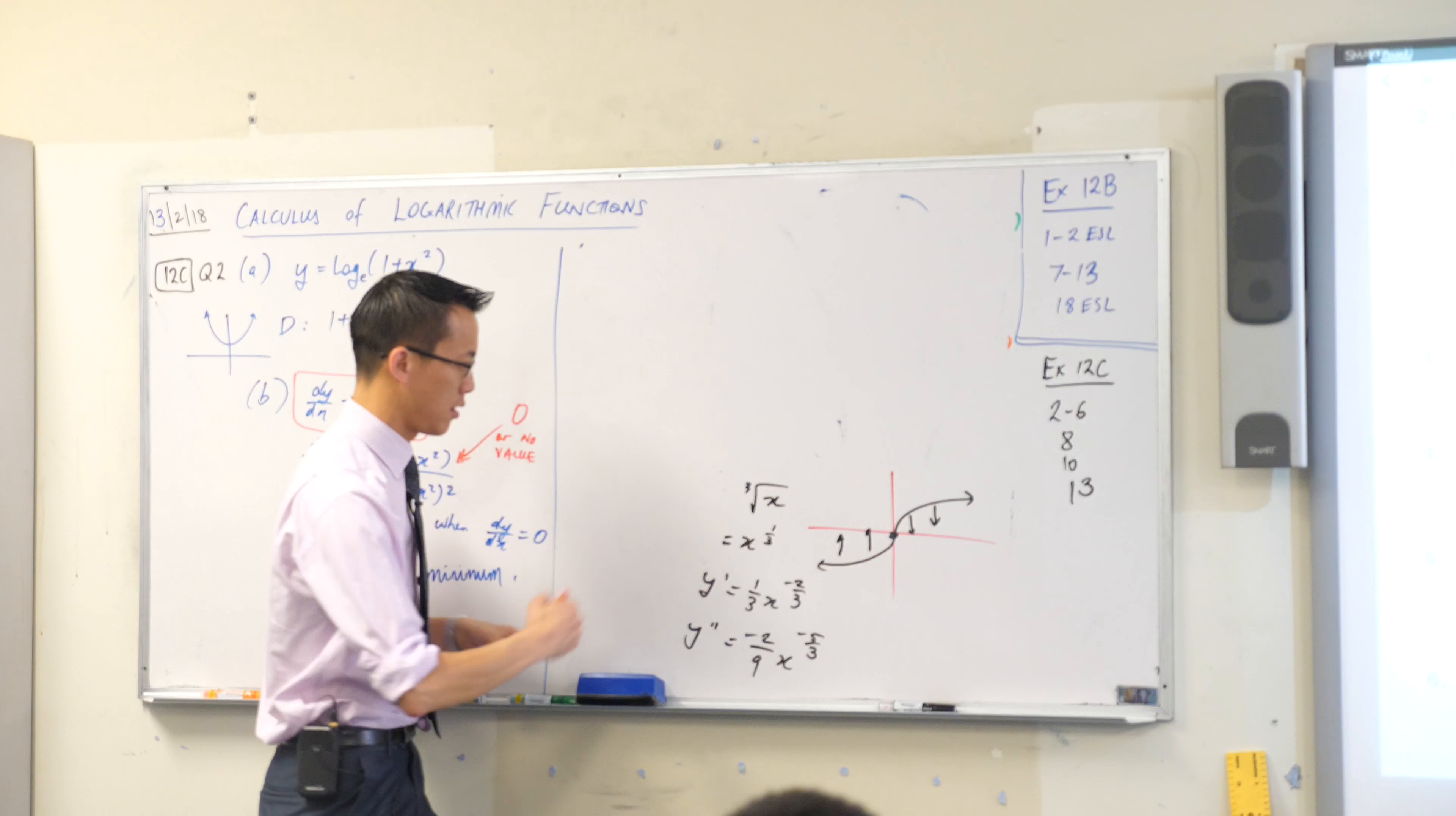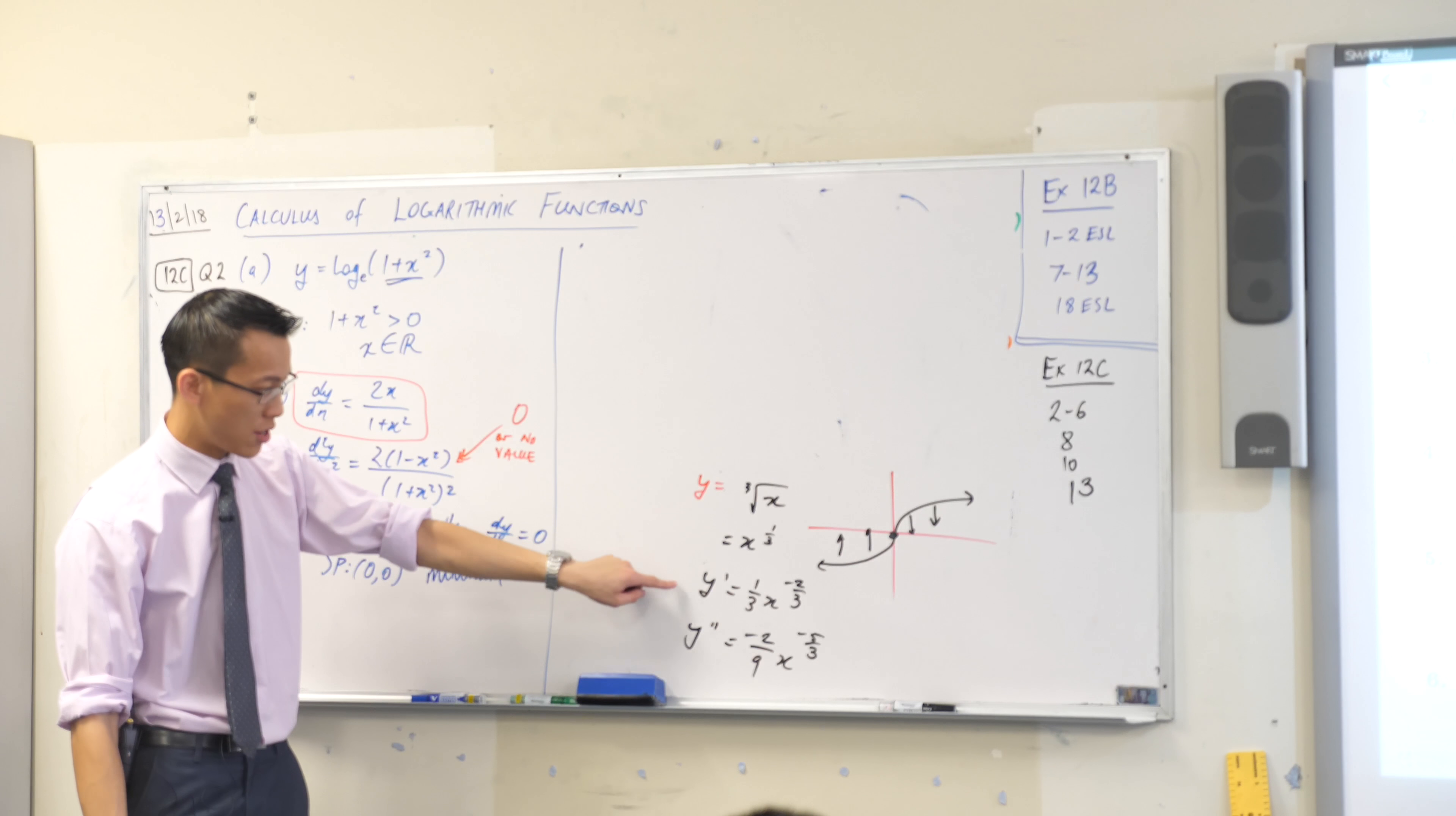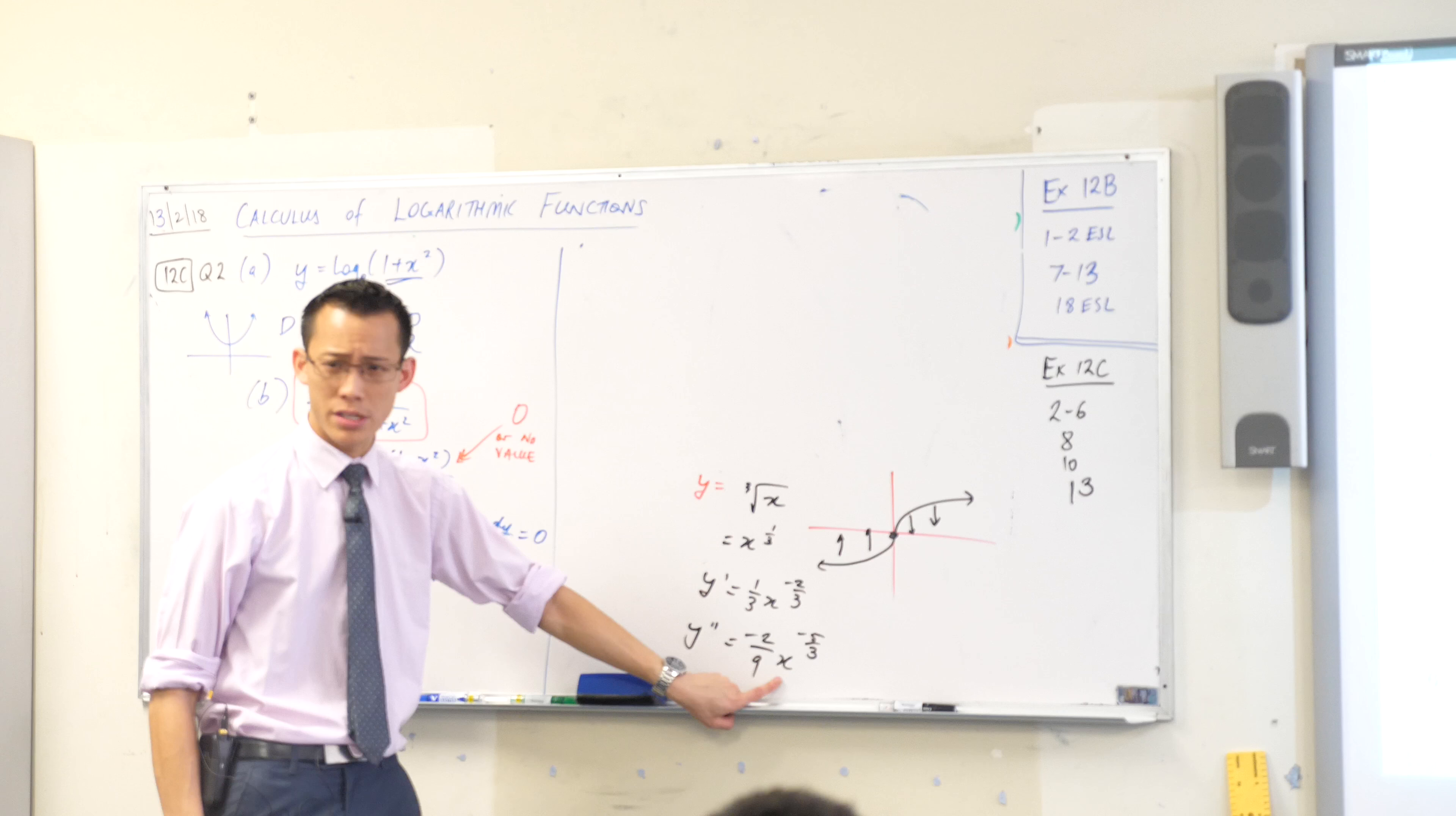This guy's the cube root of x. So if you're looking at the cube root of x, chuck it in Desmos if you'd like to convince yourself there is a point of inflection. It goes from up to down in concavity. But when you try out the derivatives, there's y dash, there's y double dash. You quickly realize that that point of inflection, zero, you can't put it in here. Why not? What happens when you put zero into this?